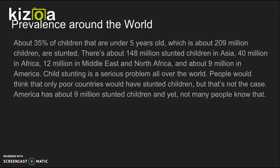Prevalence around the world: About 35% of children under 5 years old, which is about 209 million children, are stunted. There are about 148 million stunted children in Asia, 40 million in Africa, and 12 million in the Middle East and North Africa. Child stunting is a serious problem all over the world.